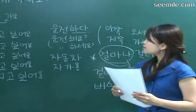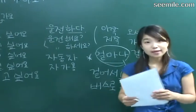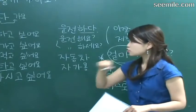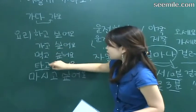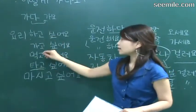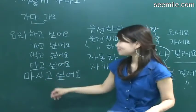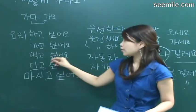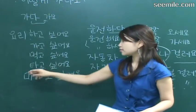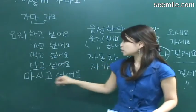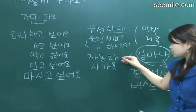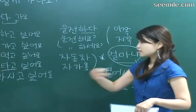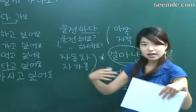That's what I want to introduce and explain today. I want you to review all these sentences and try to memorize these important verbs: 타다, 가다, 먹다, 마시다. 요리하고 싶어요 — I want to cook; 가고 싶어요 — I want to go; 먹고 싶어요 — I want to eat; 타고 싶어요 — I want to ride; 마시고 싶어요 — I want to drink. 운전하다 — drive; 자동차, 자가용 — own car. 제 차예요 — it's my car.